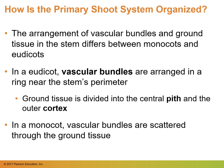Hopefully now you have a better understanding of how the xylem and phloem are structured in the plant. These vascular bundles are arranged differently in different parts of the plant, varying from the shoot system to the root system. We're going to go over how it's organized in the primary shoot system — the stem up to the leaves. The arrangement of vascular bundles and ground tissue in the stem differs between monocots and dicots. In a dicot, vascular bundles in the shoots are arranged in a ring near the stem's perimeter, with ground tissue divided into the central pith and the outer cortex. In a monocot, vascular bundles are scattered throughout the ground tissue, organized to provide structural support.